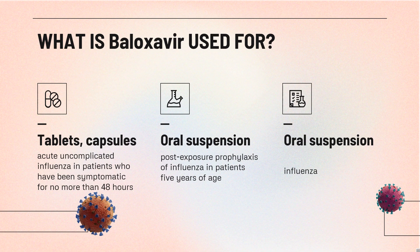In Europe, it is approved for use in patients 1 year and above for these indications. Biloxavir marboxyl is associated with a risk for loss of efficacy due to changes in influenza virus, such as changes in virus subtypes, emergence of virus resistance, and changes in viral virulence. Therefore, the drug should be used after considering available information on drug susceptibility patterns for circulating influenza virus strains.